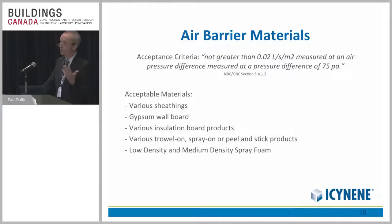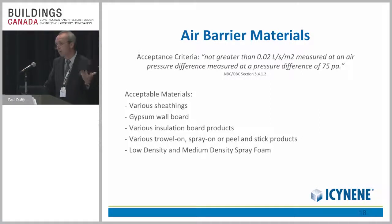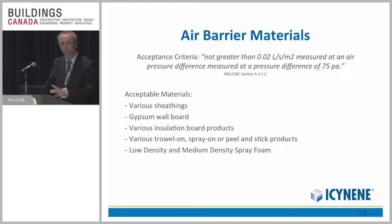The acceptable materials for air barriers listed in the code include sheathing of various types, gypsum wallboard, various insulation board products, plus a variety of trowel-on and peel-and-stick membranes, as well as spray-on foam products. The advantage of the spray-on foam product is that you get both insulation and air barrier in one material — and you'll probably get other performance as well, whether that's performance you want or don't want, which you've got to be aware of in your design.